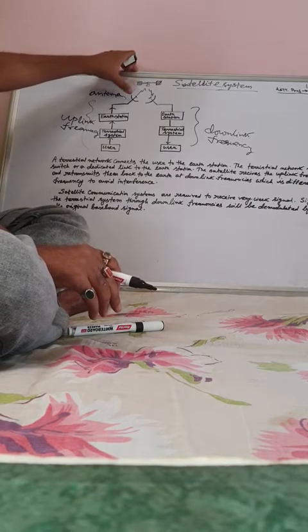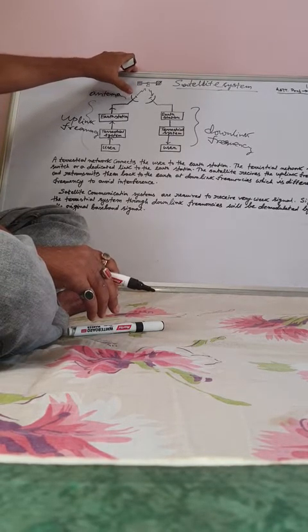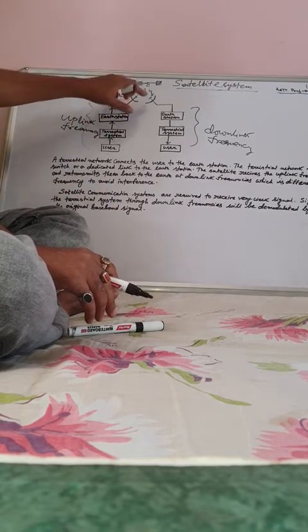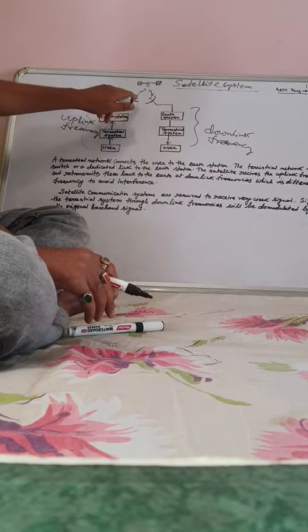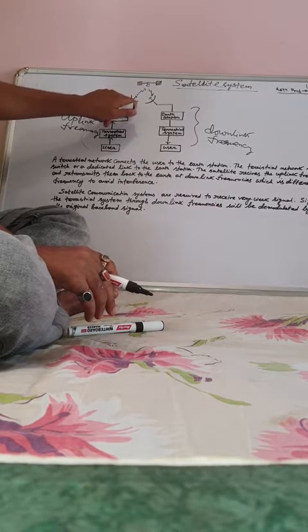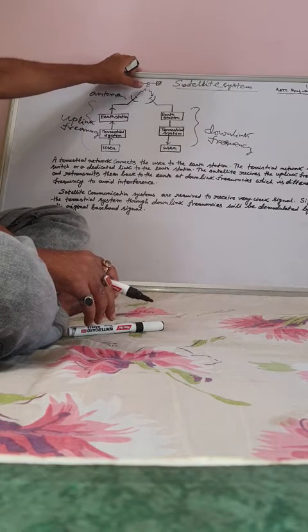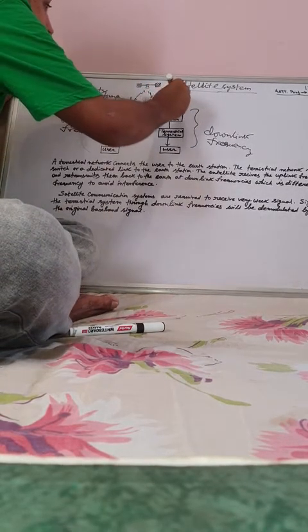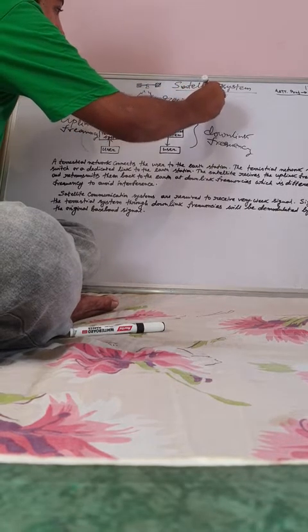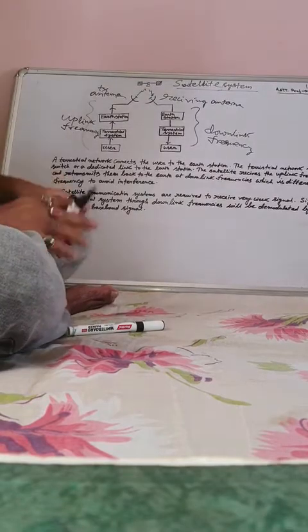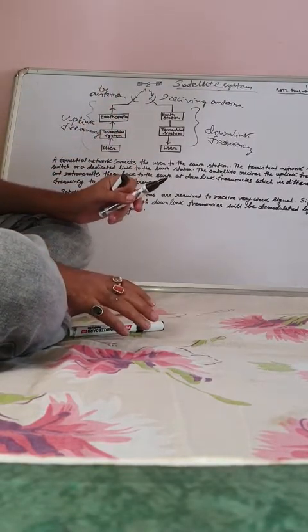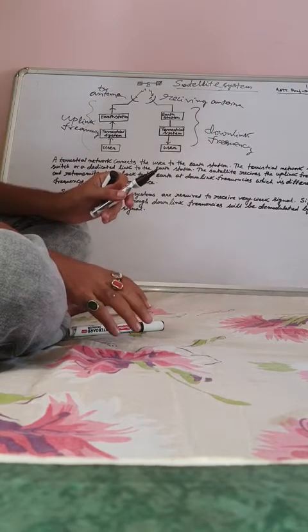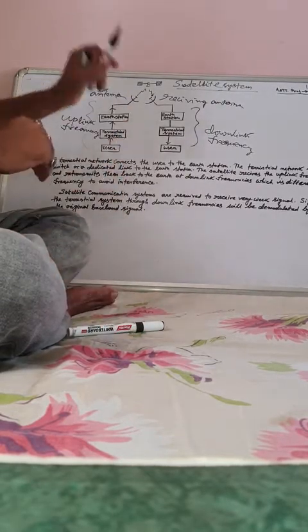The satellite receives uplink frequency from the transmitting antenna. It then amplifies and retransmits back to the receiving antenna. This may be a dish antenna or a parabolic antenna. So the satellite receives the uplink frequency from the transmitting antenna, amplifies it, and retransmits it back at a downlink frequency.